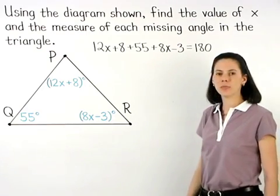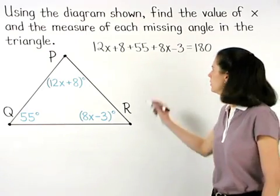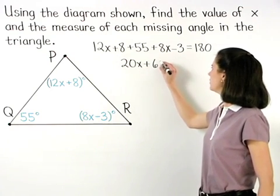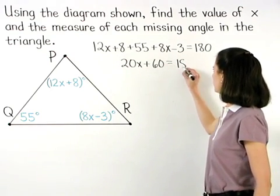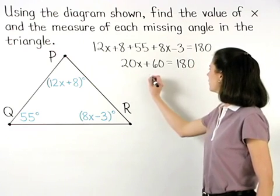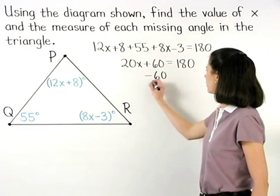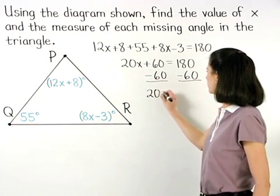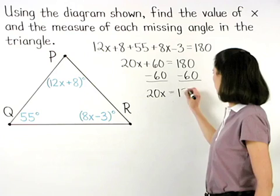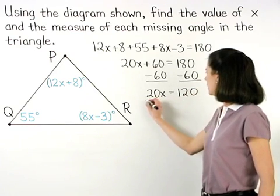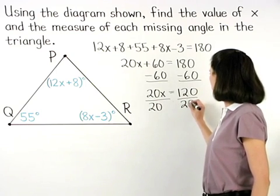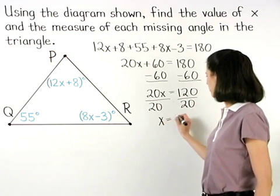Simplifying on the left side, we have 20x plus 60 equals 180. Subtracting 60 from both sides gives us 20x equals 120. Dividing both sides by 20, we find that x equals 6.